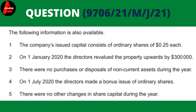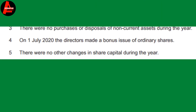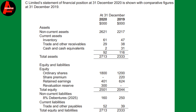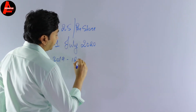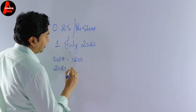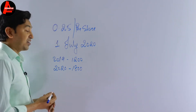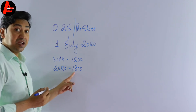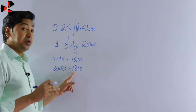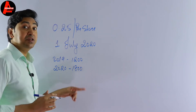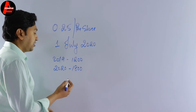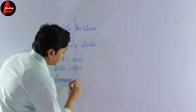If you notice, the ordinary share capital in 2020 is $1,800,000, and in 2019 it is $1,200,000. So in 2019 it was $1,200,000, but in 2020 it is $1,800,000 — it has increased by $600,000. Since there are no other changes in share capital, this means the company issued bonus shares. That is the reason the ordinary share capital has been increased by $600,000.